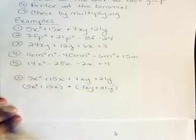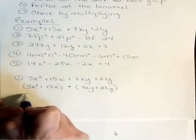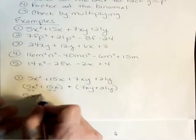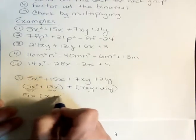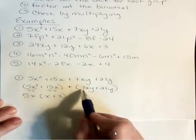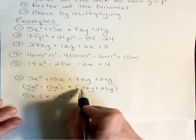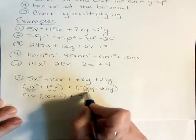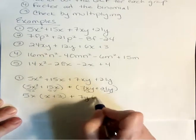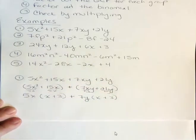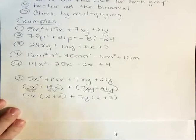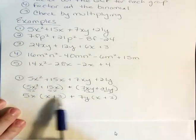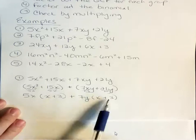Step three: factor out the common factor. In the first group, I can see a common factor of 5 and x. If I divide both of those by 5x, I'm left with x plus 3. Now for the second group — I still have this plus in between — it has a common factor of 7 and y. If I divide both of those by 7y, I get x plus 3. These two things have to match exactly. If they don't, then factor by grouping isn't working for you.